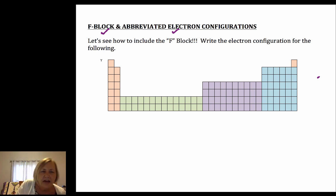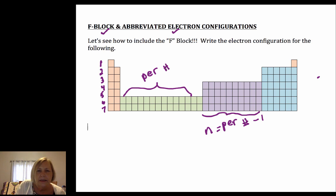So let's start with the F block. Remember we go 1, 2, 3, 4, 5, 6, 7 in periods. Now the D block is the period number minus 1, gives us our n value. For the F block it's the period number minus 2 that gives us our n.